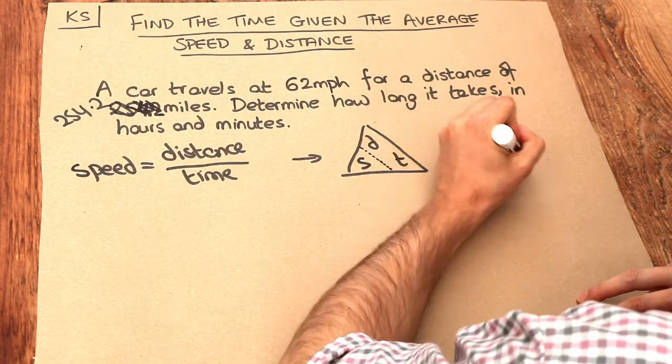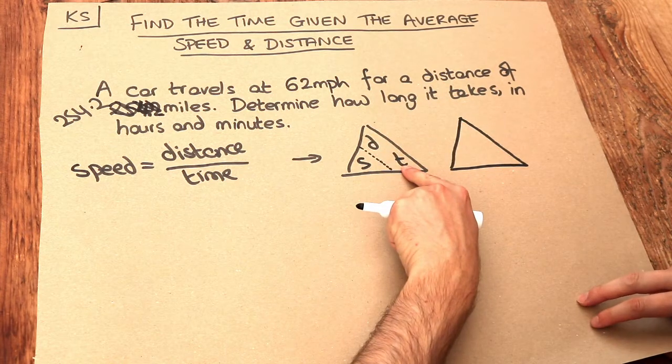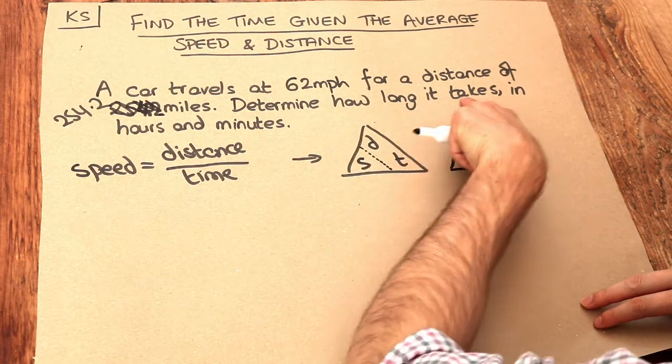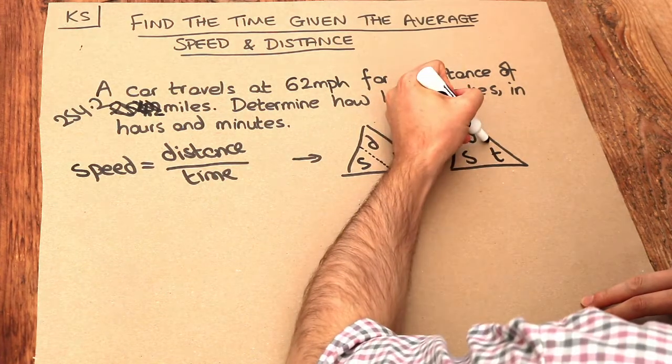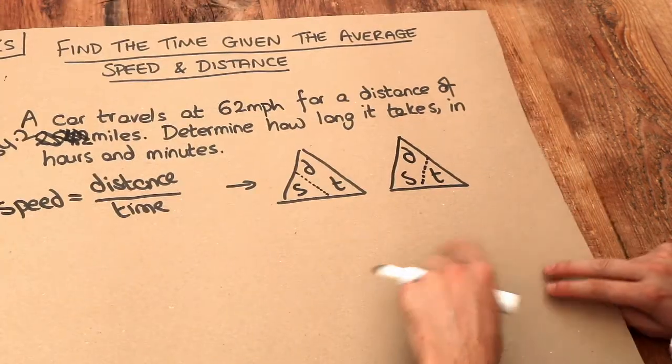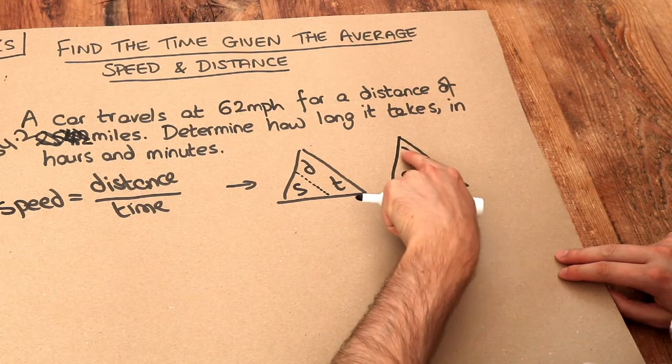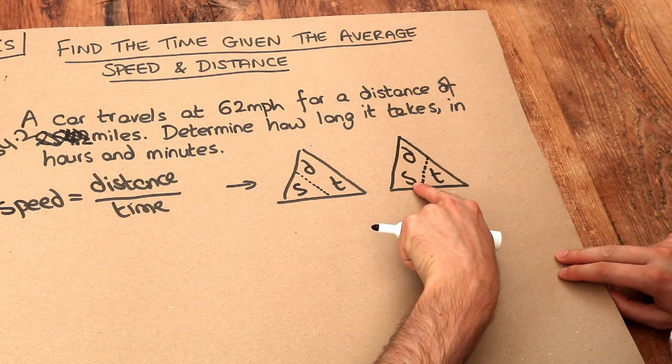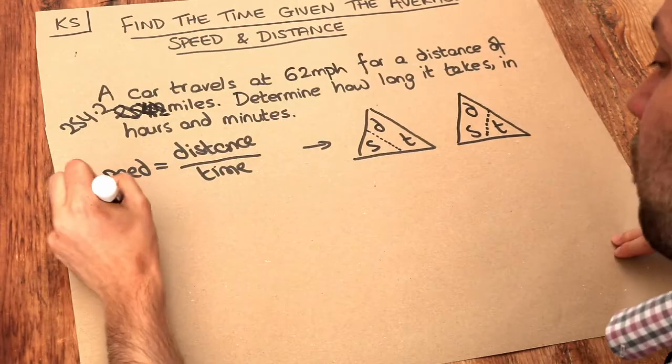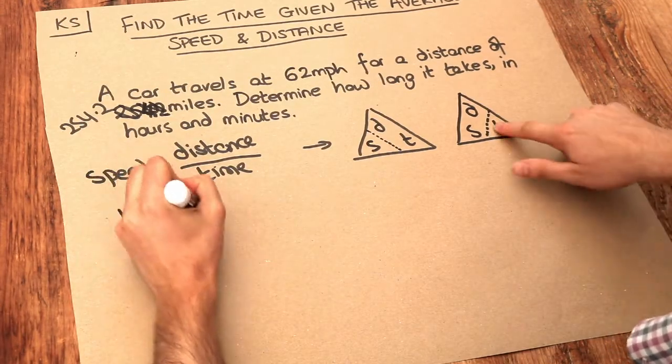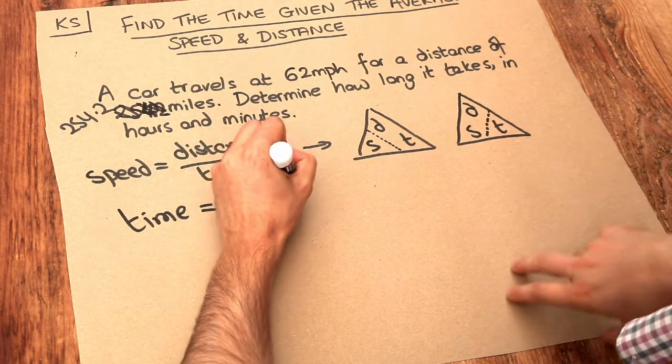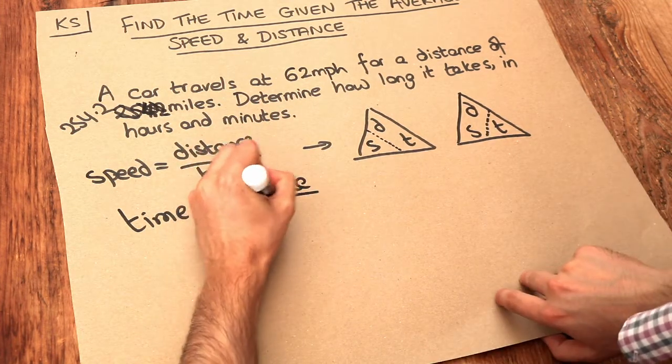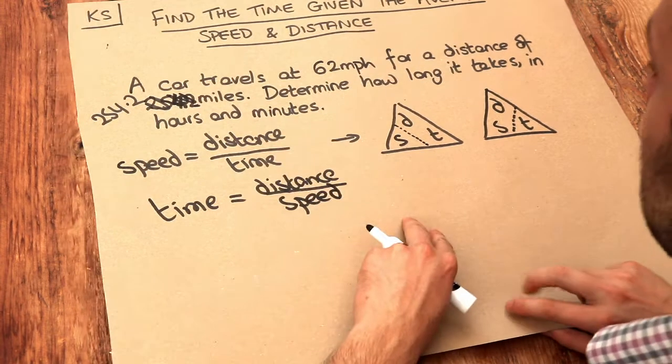But we could also put the line somewhere else in this triangle. So if we wanted to find time, which is what we want to do here—determine how long it takes—in this triangle, if we put the line here instead, can you see that now time is distance over speed? Because the D is above the S. So we could rewrite this formula as time is equal to distance over speed. So we've made time the subject of the formula.